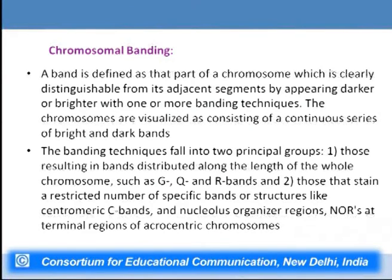A much more effective method than grouping by shape and size is chromosomal banding. A band is defined as that part of a chromosome clearly distinguishable from adjacent segments by appearing darker or brighter with one or more banding techniques. Chromosomes are visualized as a continuous series of bright and dark bands. There are two principal groups of banding techniques: those producing bands distributed along the length of chromosomes (G banding, Q banding, R banding), and those staining a restricted number of specific bands or structures such as centromere (C band) or nucleolus organizer regions on acrocentric chromosomes.